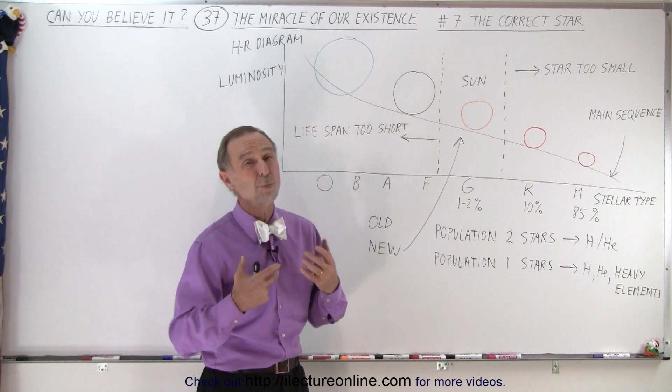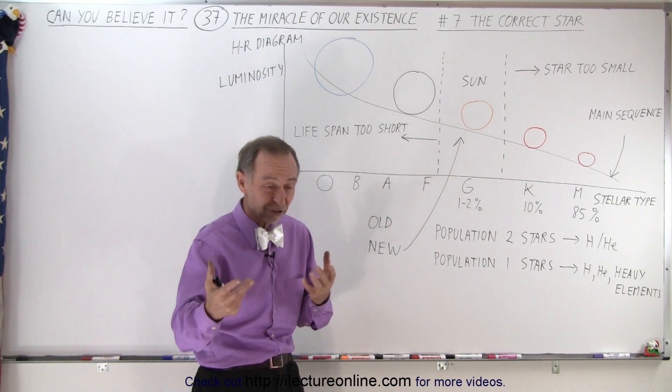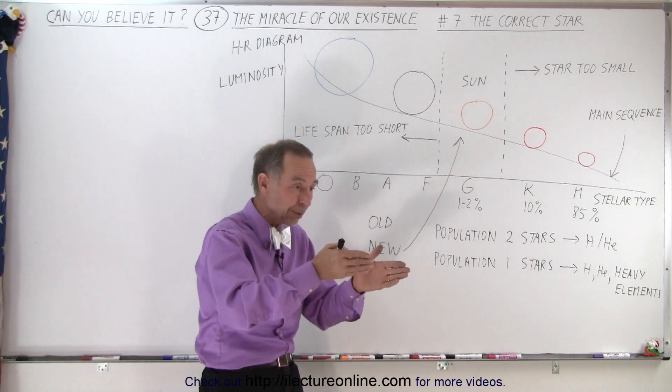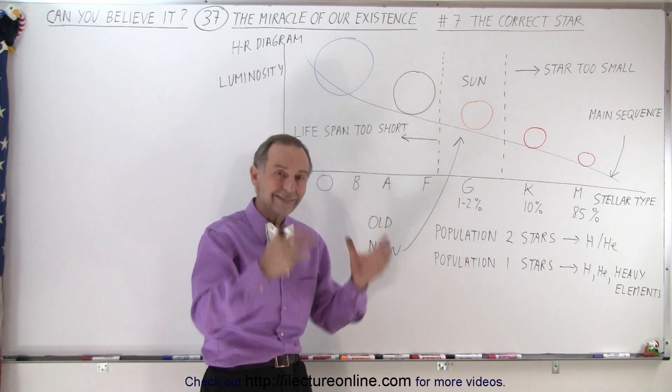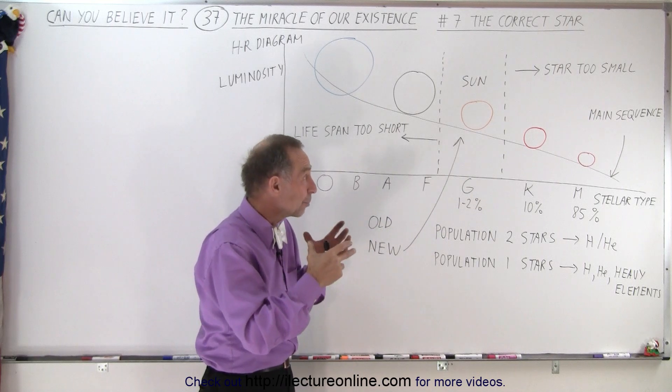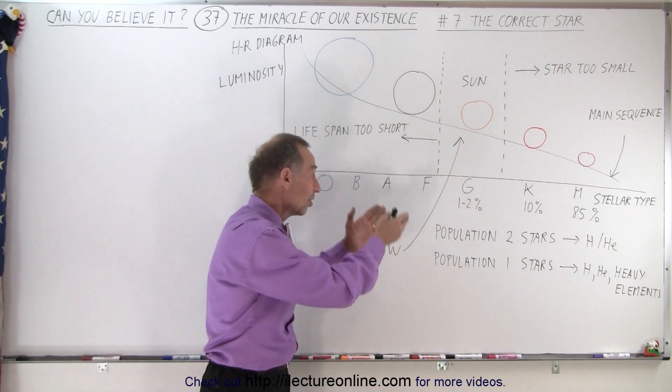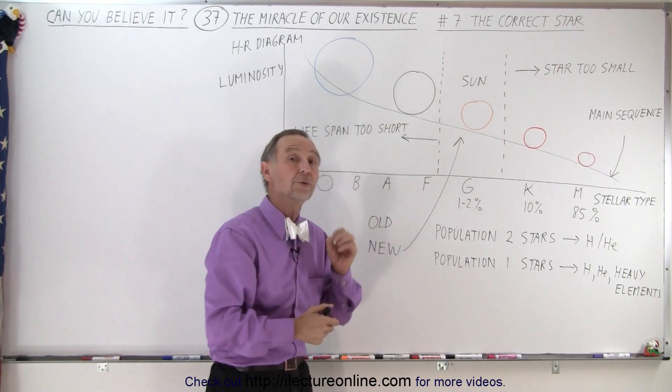So now you see that if you start combining having the right planet, in the right Goldilocks position, in the right size to hang on to the atmosphere, that must then be around the right kind of star, which is actually quite rare as well.